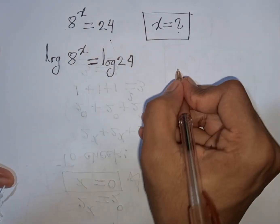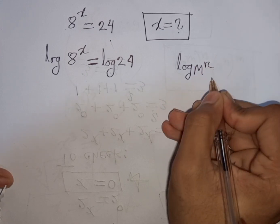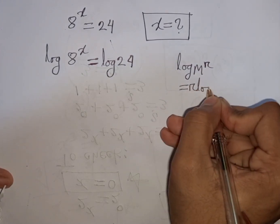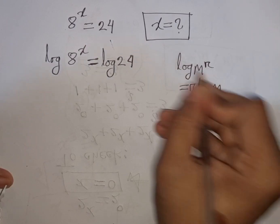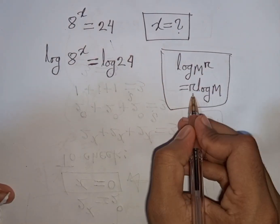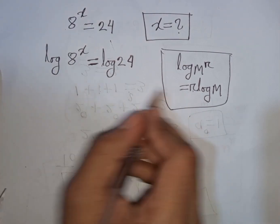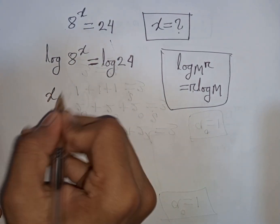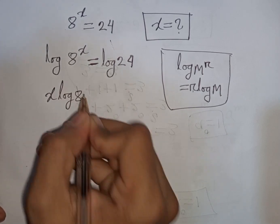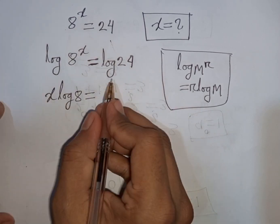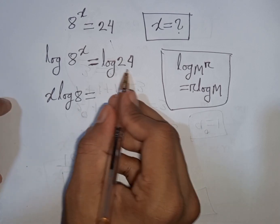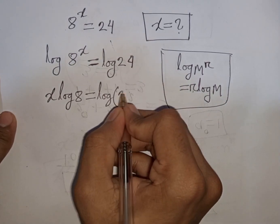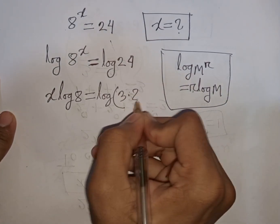Here we can apply the rule that log m power r is equal to r log m. This power r moves to the base. So according to this formula, we can write log of 8 power x as x log 8, which is equal to log 24. And log 24 is the same as log of 3 times 8.